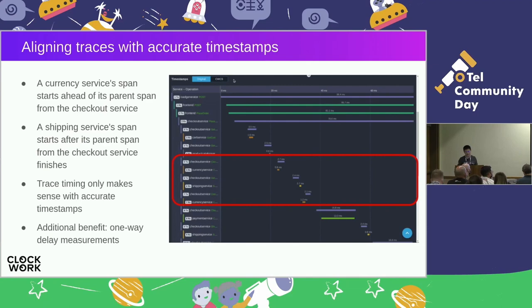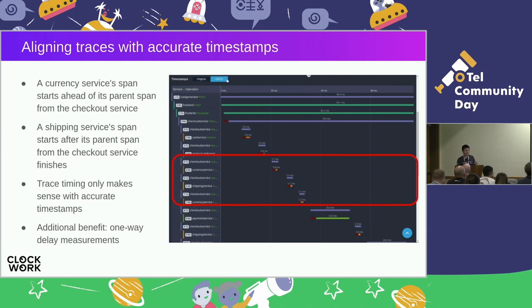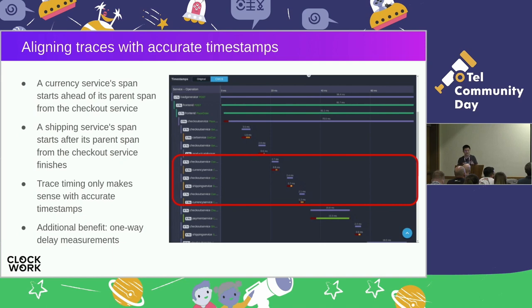Here's an example where bad clocks create traces that make no sense. Initially, synchronizing clocks using NTP, a span from the currency service starts before its parent span starts, and a span from the shipping service starts after its parent span has ended — which obviously makes no sense. But if you simply switch to accurate timestamps, the tree suddenly makes sense, all timings are correct. There's also an additional benefit: we can now measure one-way delays. We can measure the time from when an RPC request is sent to when it is received, and similarly for RPC responses. This was never possible before without accurately synchronized clocks.